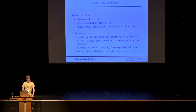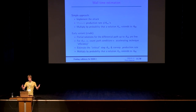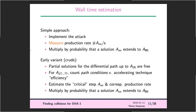How do you get these estimates? The best way is to implement the attack and measure the production rate of partial solutions that follow the differential path up to a point — say, step A56. You look at how many of these you generate per second, then compute the probability that one extends to a full collision. Multiplying by the inverse probability gives a pretty good estimate of the total time.